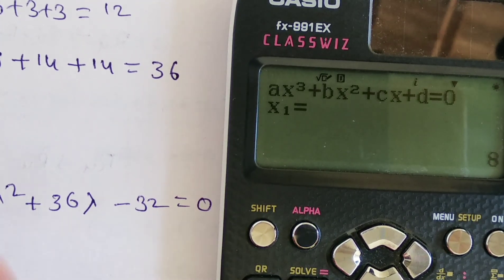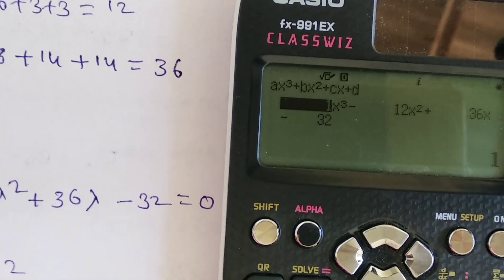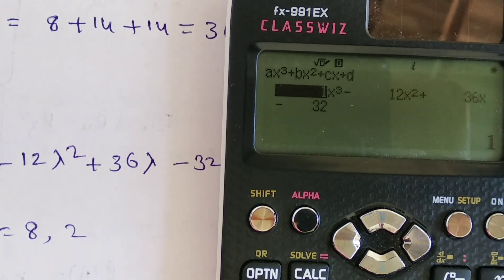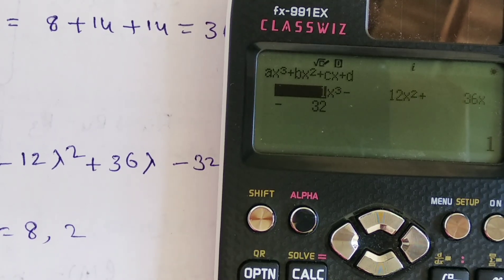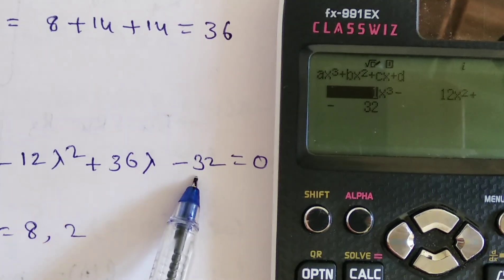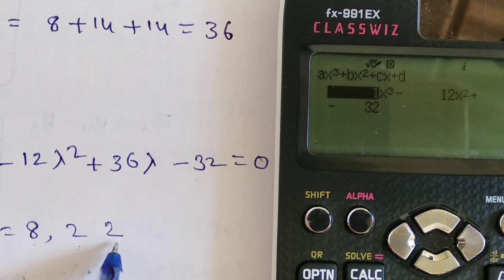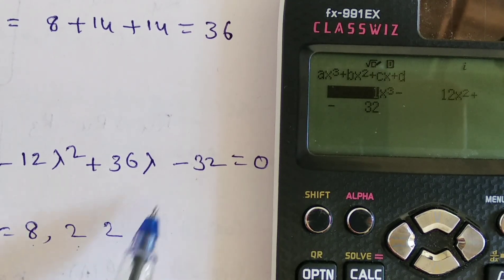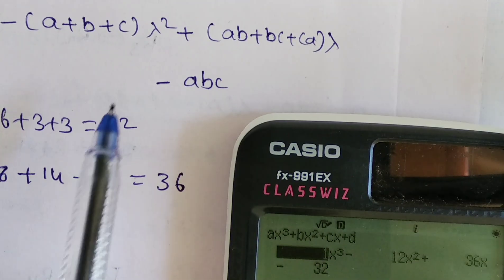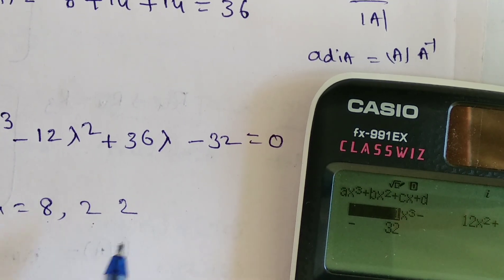X1 = 8 and X2 = 2. X3 is not showing because it is a repeated root. Whenever roots are repeated, the calculator won't display it. Since det(A) = product of eigenvalues = 8 × 2 × ? = 32, the third root must be 2. So the eigenvalues are λ₁ = 8, λ₂ = 2, λ₃ = 2.